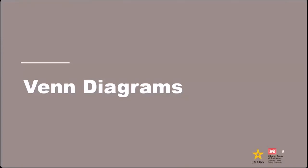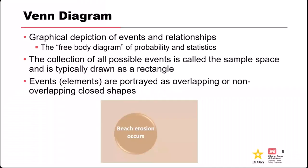Venn diagrams are the most common way to essentially draw a picture of events and what they look like relative to each other. If you're an engineer, you can think of the Venn diagram as the free body diagram of probability and statistics — roughly equivalent to what you learned in engineering mechanics. The way we draw Venn diagrams, they're usually depicted with a base shape of a rectangle, but that's not mandatory; that's just standard practice.